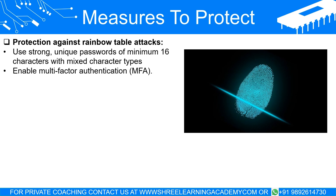How to protect against rainbow table attacks: the best protection is to use strong, unique passwords for each login. A password should be a minimum of 16 characters and include a mix of uppercase and lowercase letters, numbers, and special characters. The more complex the password, the larger the corresponding rainbow table would need to be, making a rainbow table attack increasingly impractical. Another defense is enabling multi-factor authentication (MFA), which requires users to verify their identities using at least two different authentication methods. Even if an attacker cracks a password, they won't be able to access the account without the second factor of authentication.